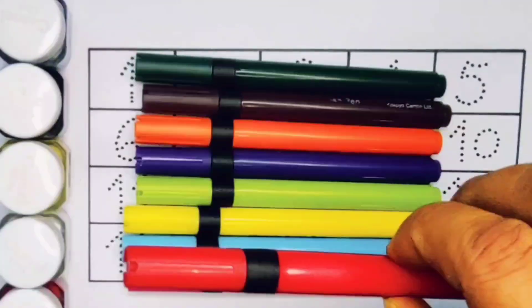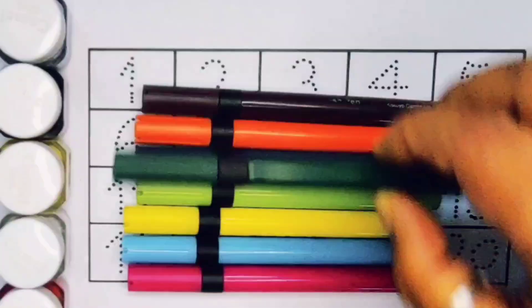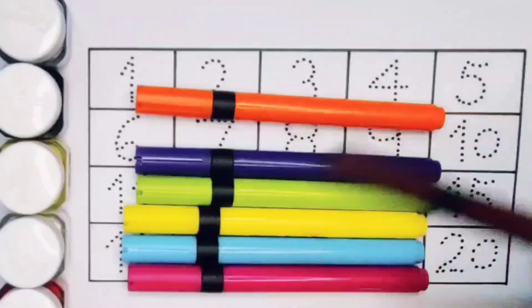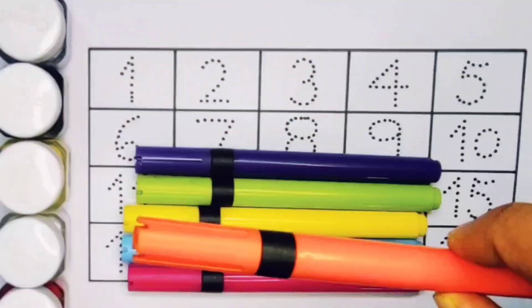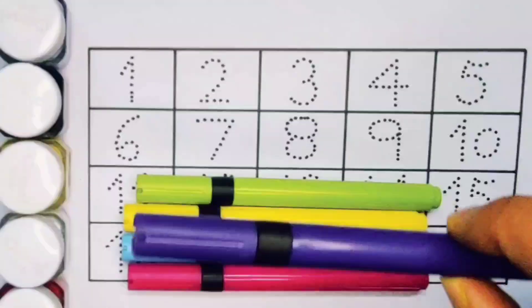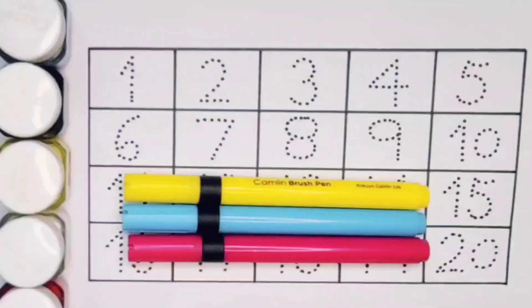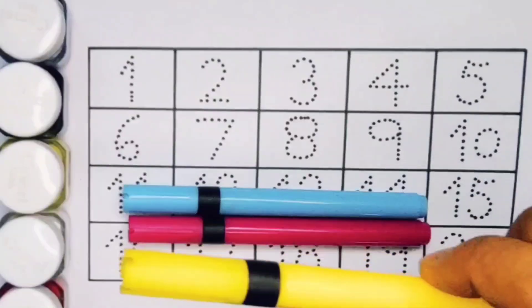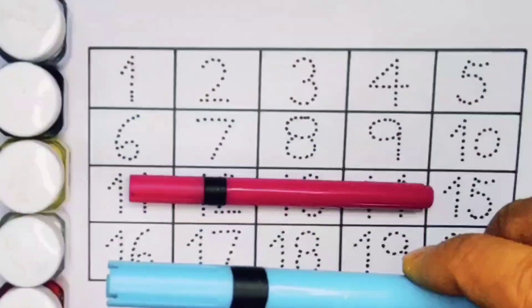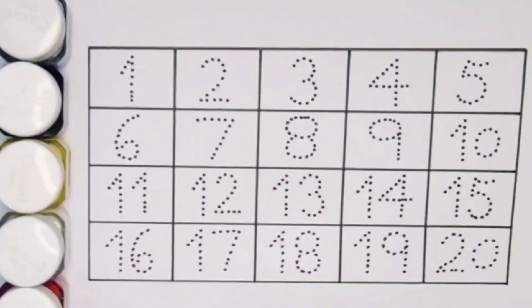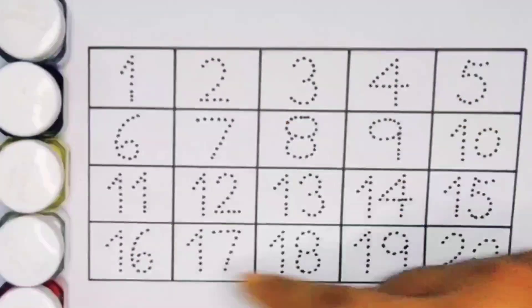Red color, green color, chocolate color, orange color, purple color, light green color, yellow color, sky blue color, and pink color. Now let's learn the numbers counting 1 to 20.